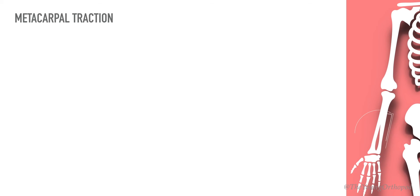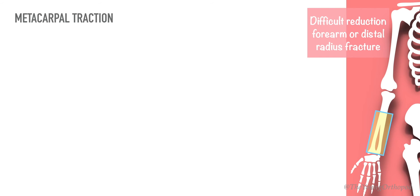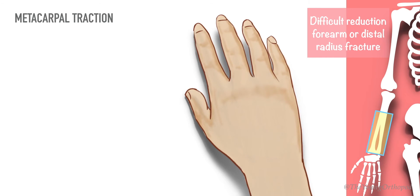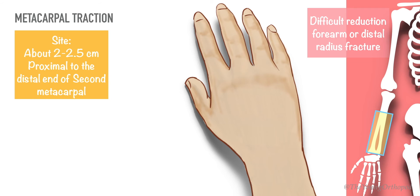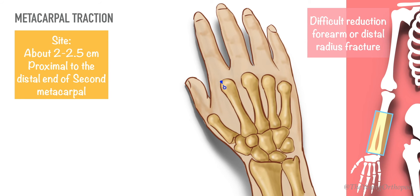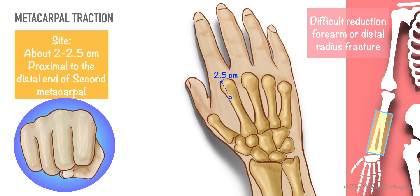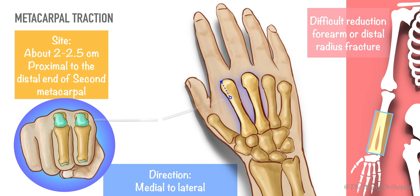Indications for metacarpal traction include difficult reduction of forearm or distal radius fractures. The entry site for the pin is marked at 2.5 centimeters proximal to the distal end of the second metacarpal. The K-wires pass transversely across the second and third metacarpals at right angles to the longitudinal axis of the radius, in a medial to lateral or radial to ulnar direction.